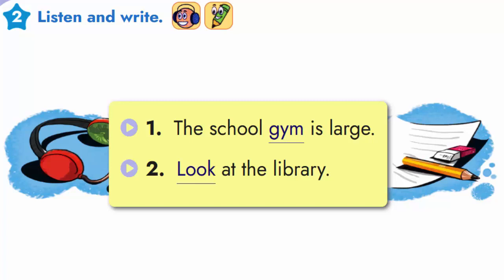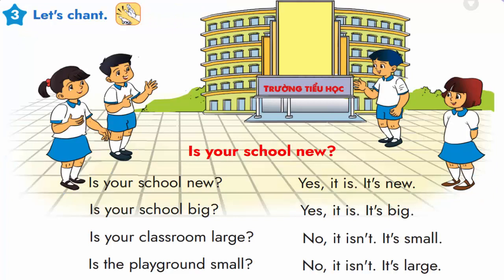3. Let's chant. Look at the library. The school gym is old. Is your school new? Yes, it is. It's new. Is your school big? Yes, it is. It's big. Is your classroom large? No, it isn't. It's small. Is the playground small? No, it isn't. It's large.